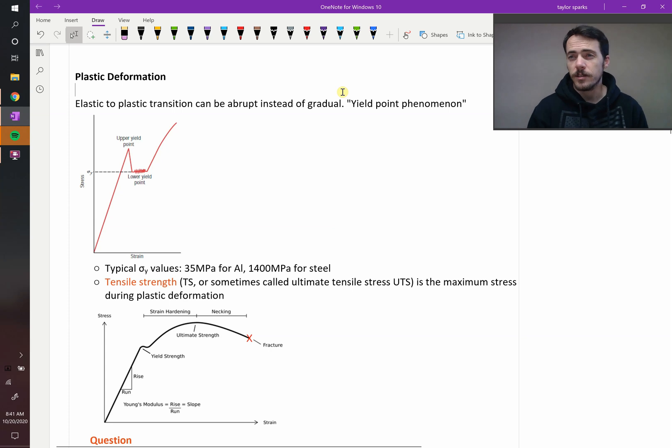We've talked a fair bit about elastic deformation. Let's dive into plastic deformation a little bit more. Once you start bending something and it's not going back, what are the sort of things that are happening along the way up until the point where it fractures? Sometimes we see that the elastic to plastic transition is really abrupt instead of gradual.